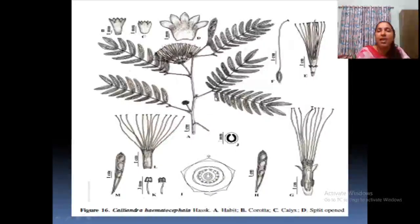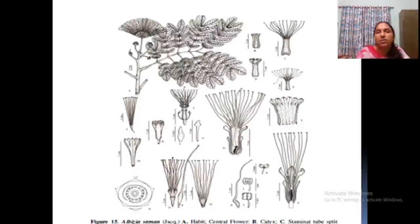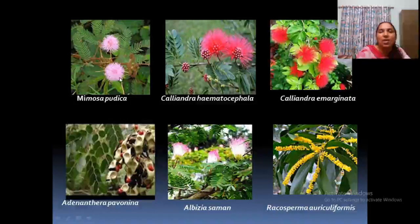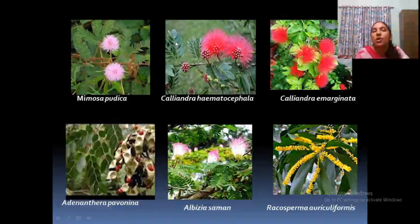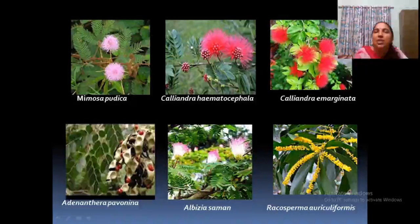Calliandra haematocephala — a very common garden plant with red-colored flowers. The leaves look like Mimosa. This may be available in your field — you can check it out and draw it in your record sheet. Albizia saman is not so common. Mimosa pudica — go around your field and near your home surroundings, you can see the touch-me-not. Calliandra emarginata has large, split leaves, while hematocephala has smaller leaves — both are widely available garden plants.